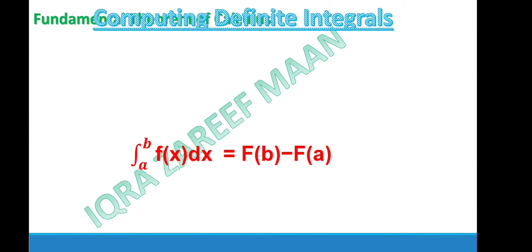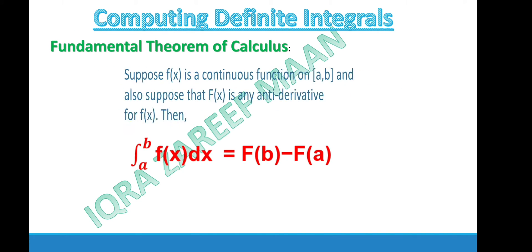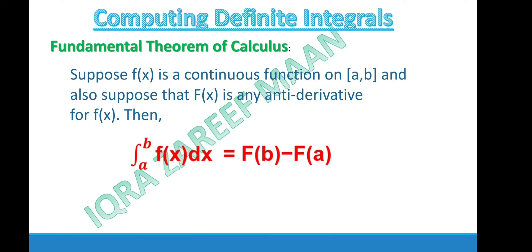Computing definite integrals — the fundamental theorem of calculus: suppose f(x) is a continuous function on a closed interval [a, b], and F(x) is any anti-derivative of f(x). Then the integral from a to b of f(x) dx equals F(b) minus F(a). F(x) is the anti-derivative of f(x), and we put the upper limit b and subtract the lower limit a: F(b) − F(a).